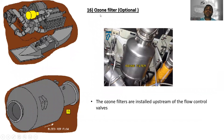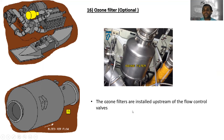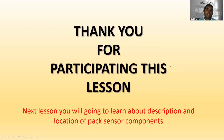The last component is the ozone filter — it is an optional component, but most aircraft have one. Ozone filters are installed upstream of the flow control valve.